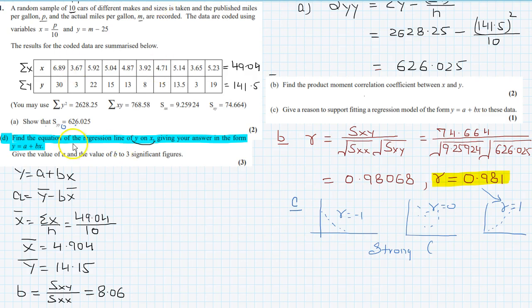So now we have the mean of x, the mean of y, and we have the value of b. So by this, a will be 14.15 minus 8.06 multiplied by 4.904. So the value of a will be minus 25.394.